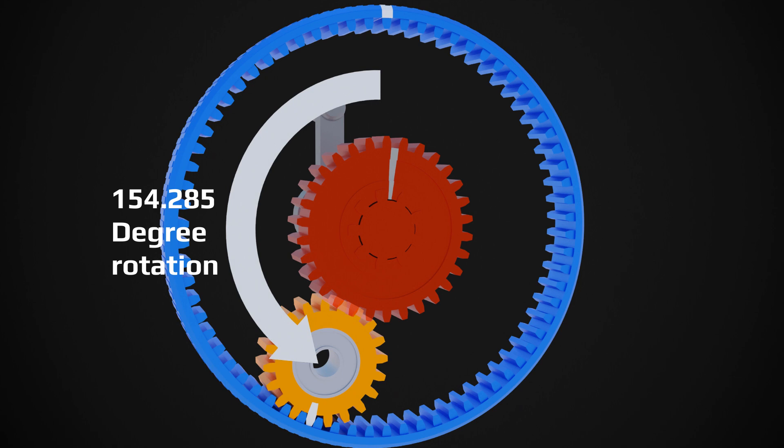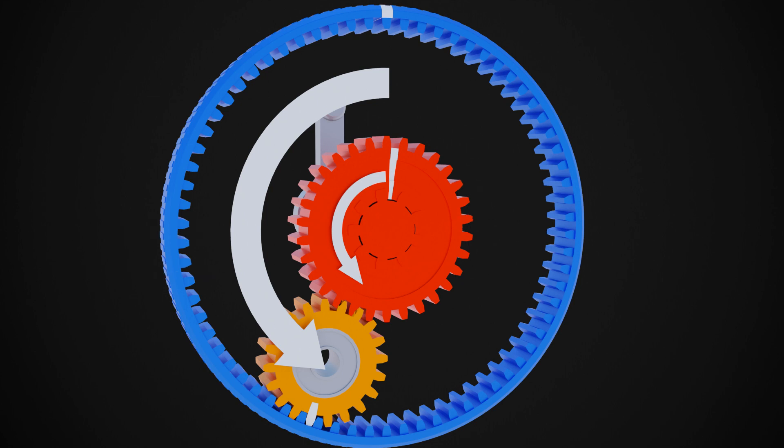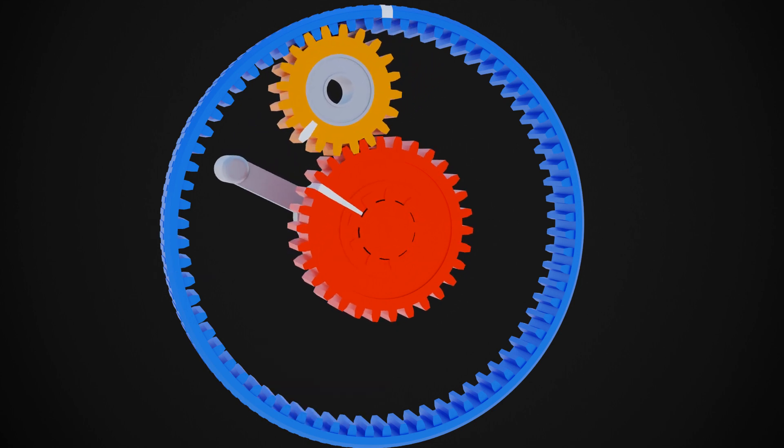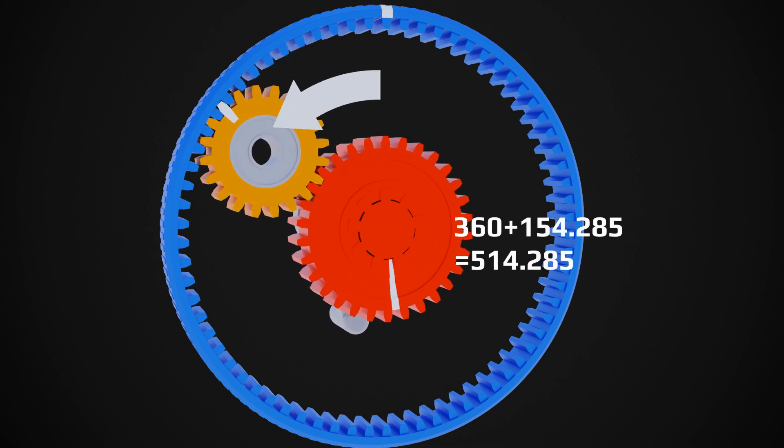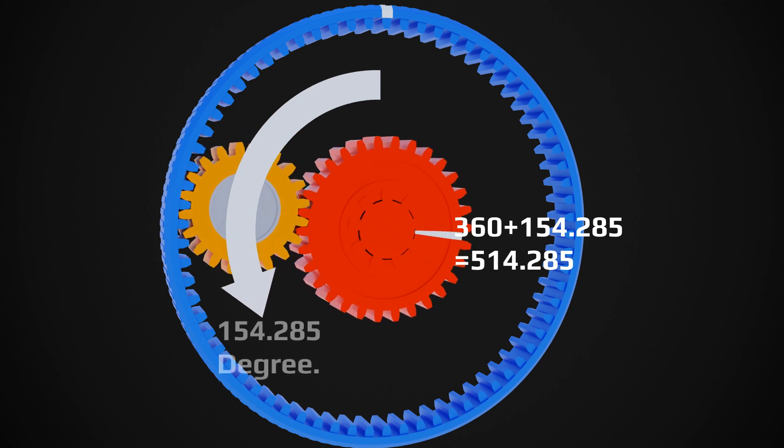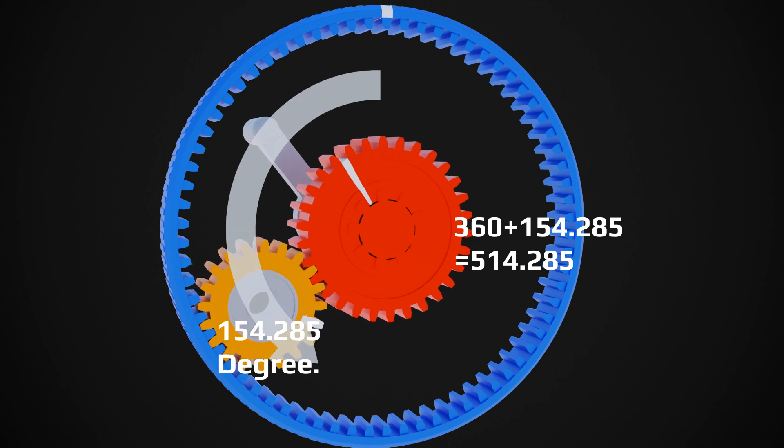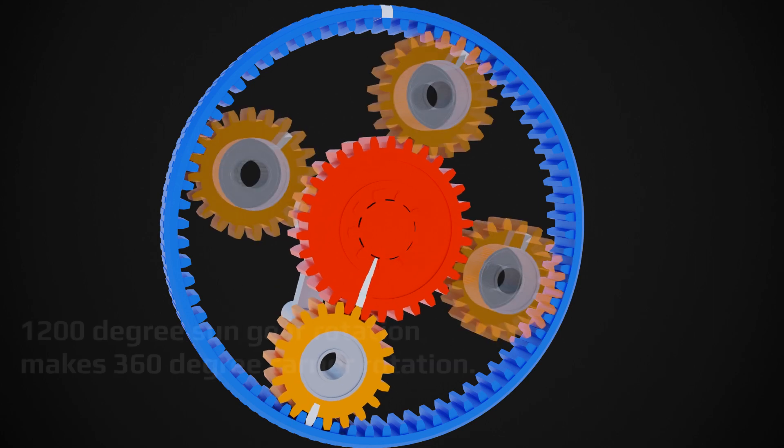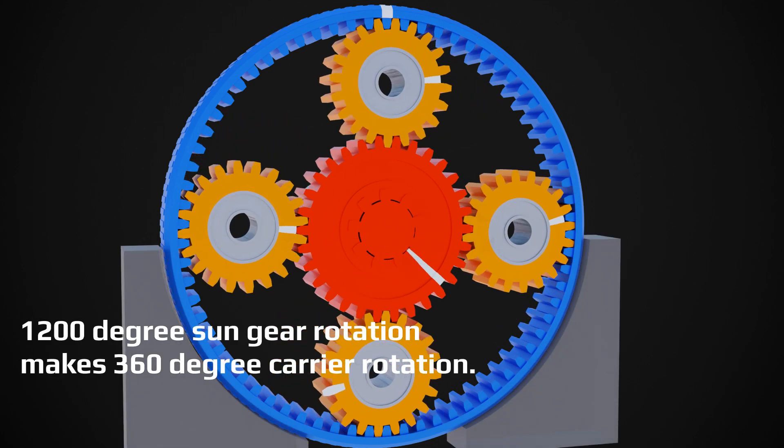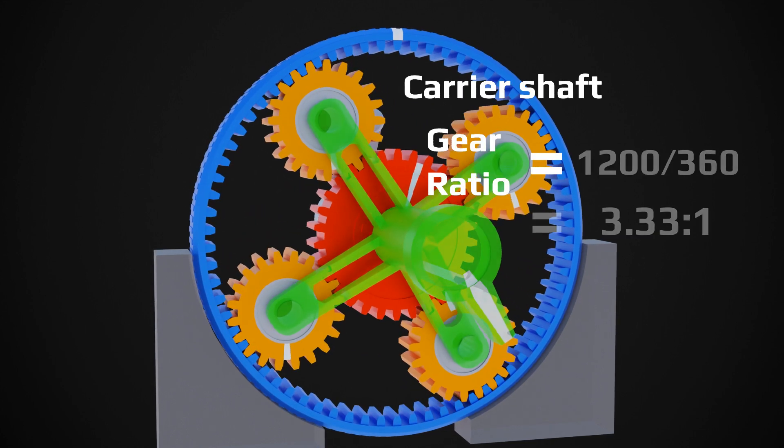But this orbiting motion of planet gear will make the sun gear rotate this additional 154.285 degrees. That means not 360 degrees but 514.285 degrees rotation of sun gear will cause the carrier shaft rotate only 154.285 degrees. In other words, for one complete rotation of carrier, sun gear has to rotate 1200 degrees. So the gear ratio will be approximately 3.33 to 1.